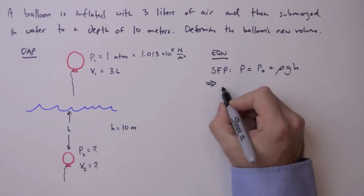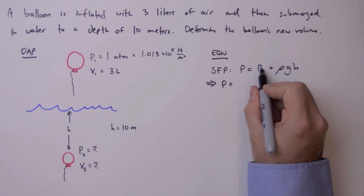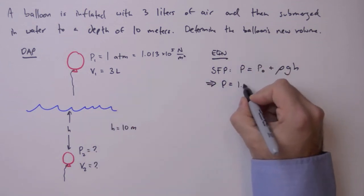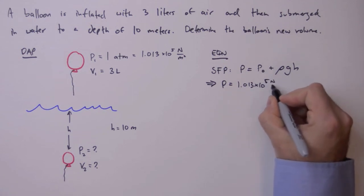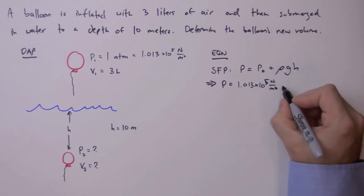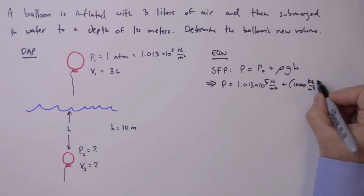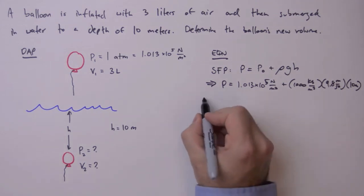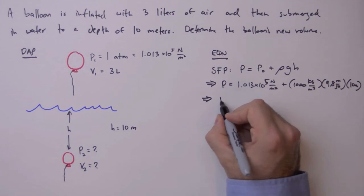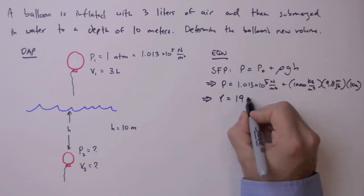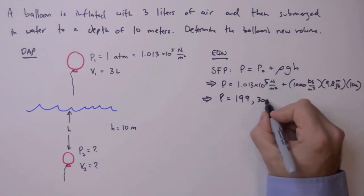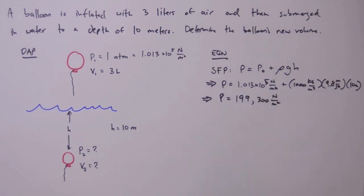We get P is equal to, well, the pressure at the surface is going to be one atmosphere, so 1.013 times 10 to the fifth newtons per square meter, plus rho, the density of water is 1000 kilogram meters cubed times 9.8 meters per second squared times the depth of 10 meters. That gives us a pressure of 199,300 pascals or newtons per meter squared.